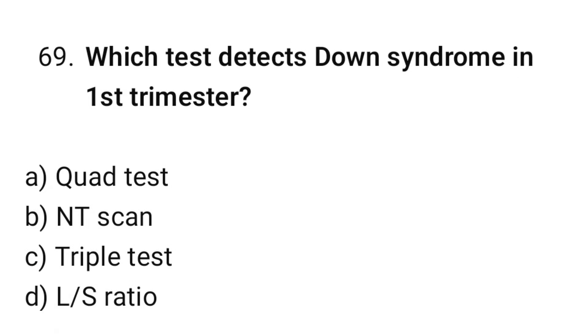Question number 69: Which test detects Down syndrome in the first trimester? The correct option is B: NT scan (nuchal translucency scan).